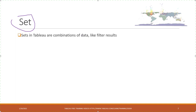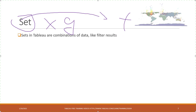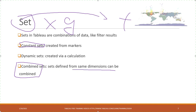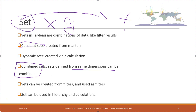Now let's talk about set. It's our first time to see set. A set is a combination of data — it may sound like group, but it's more like a filter. If you keep the result of a filter, that is a set. Sets can be created from markers (called constant sets), via dynamic calculations, or from the same dimensions and combined together. Sets can also be created from filters and used as filters, and can be used in hierarchies and calculations.